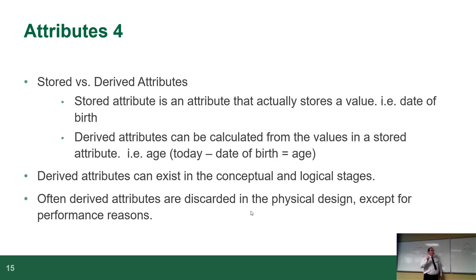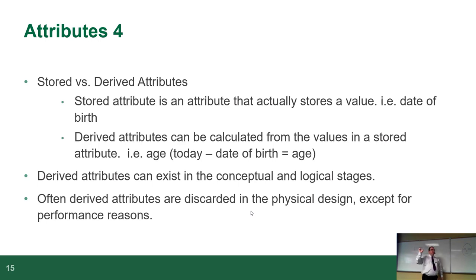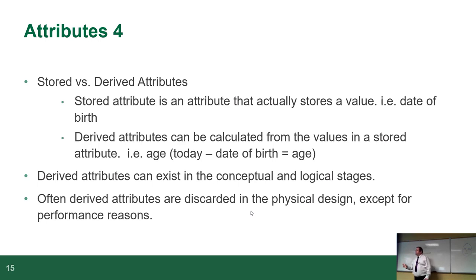Attributes that can be defined by a mathematical equation are derived attributes. If you can figure out the value of one attribute based on the values of other attributes, that's a calculation — that's derived. If an attribute cannot be calculated based on other attributes, then it's stored. Quantity is stored, item price is stored, but item price times quantity minus discount is a calculated value — derived. Anything you can express as a mathematical equation using other parts of the database is derived.